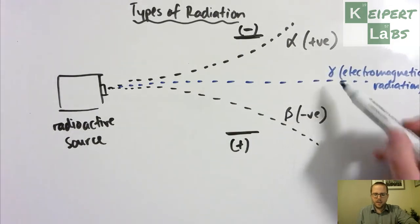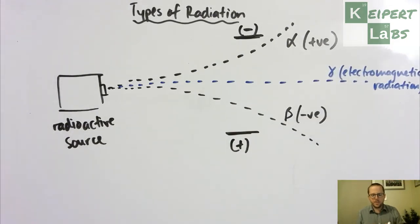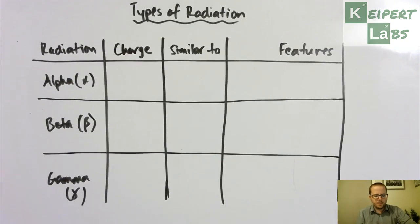So alpha, beta, and gamma radiation. All right, we're now going to spend a little bit of time constructing a table to kind of illustrate what these are like. All right, so take the time to pause the video and make sure that you've got this table drawn up.